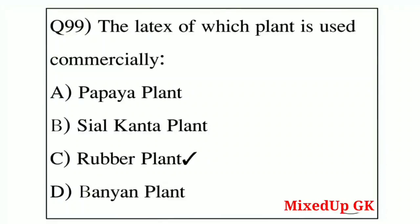Question number 99: the latex of which plant is used commercially? Option A: papaya plant, Option B: cactus plant, Option C: rubber plant, Option D: banyan plant. The correct answer is Option C — rubber plant. The rubber plant produces latex that is commercially used.